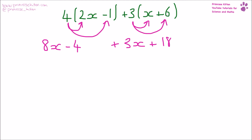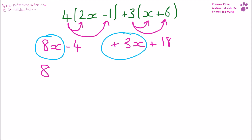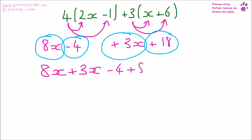Now we need to get all of the like terms together. Here we have 8x and 3x, so we go 8x plus 3x. Here we have the numbers: minus 4 plus 18. Now 8x plus 3x — you just add the 8 and the 3 together — that gives us 11x. And minus 4 plus 18 gives us plus 14. So I've expanded the brackets and simplified it.